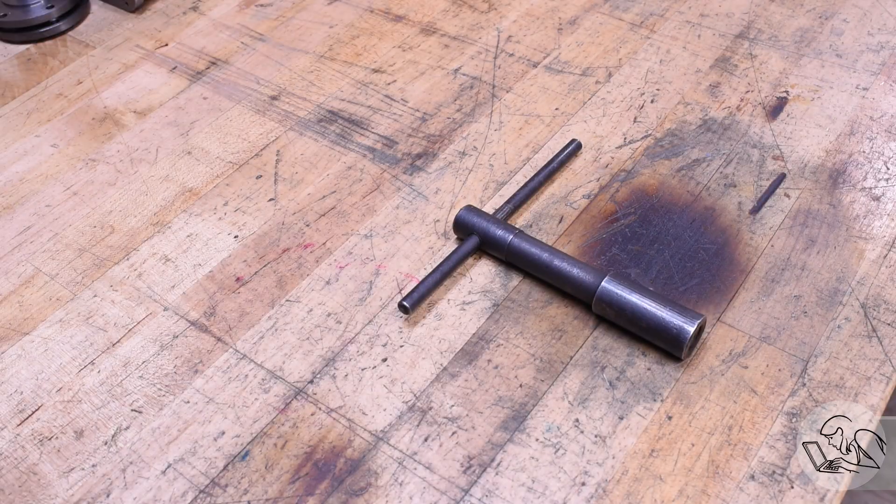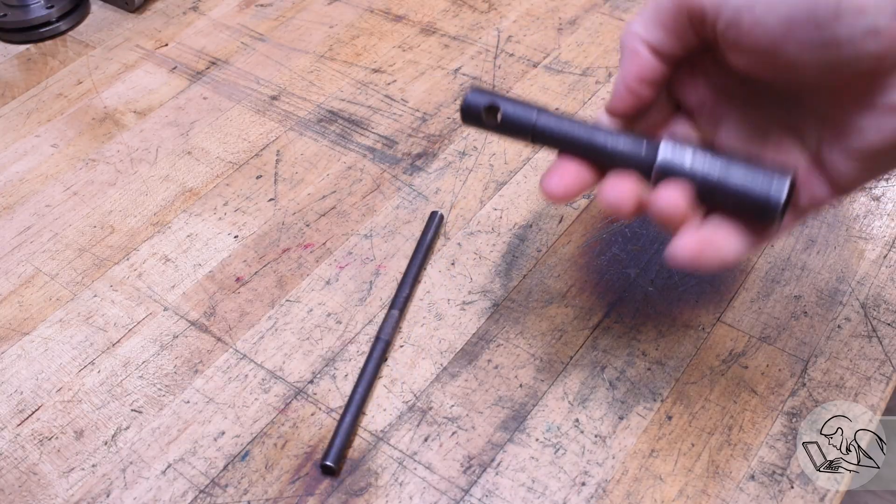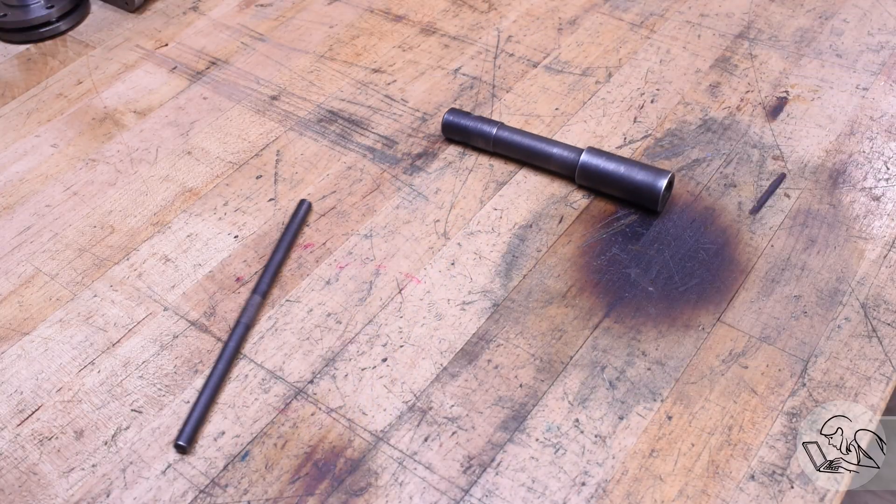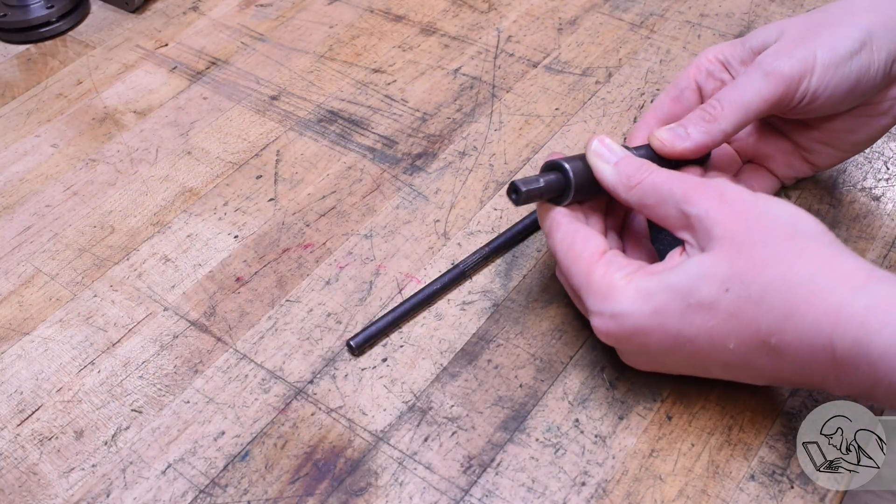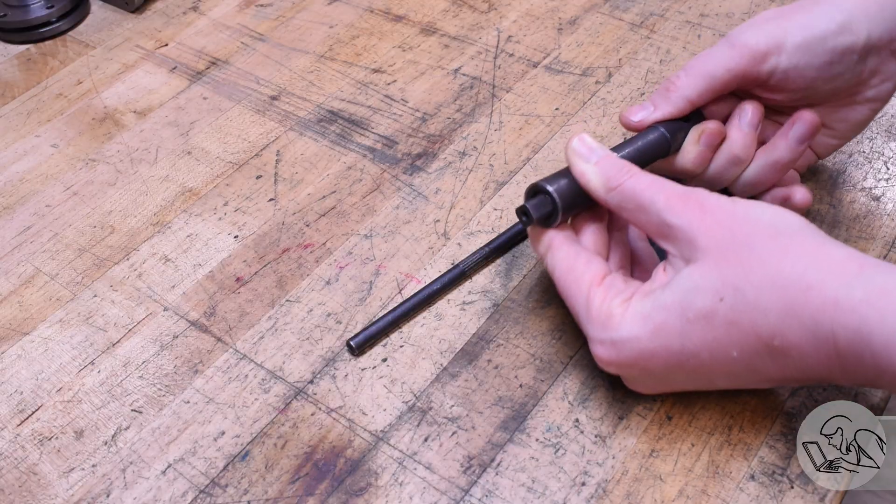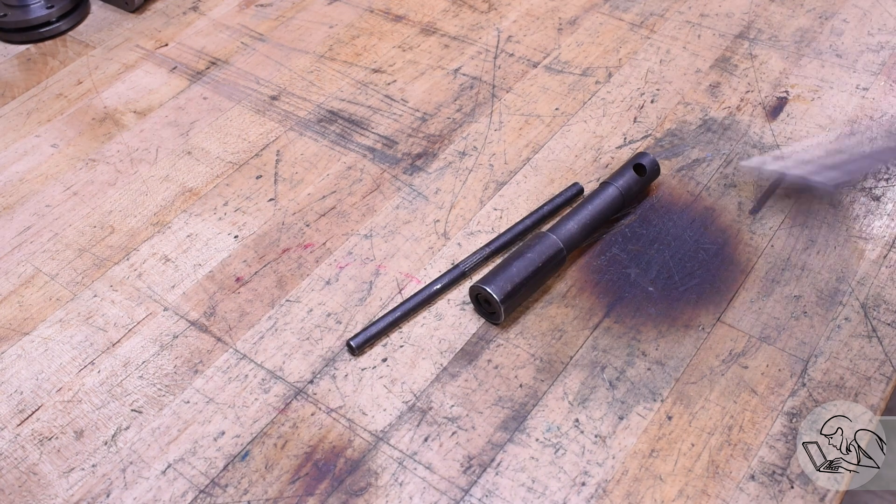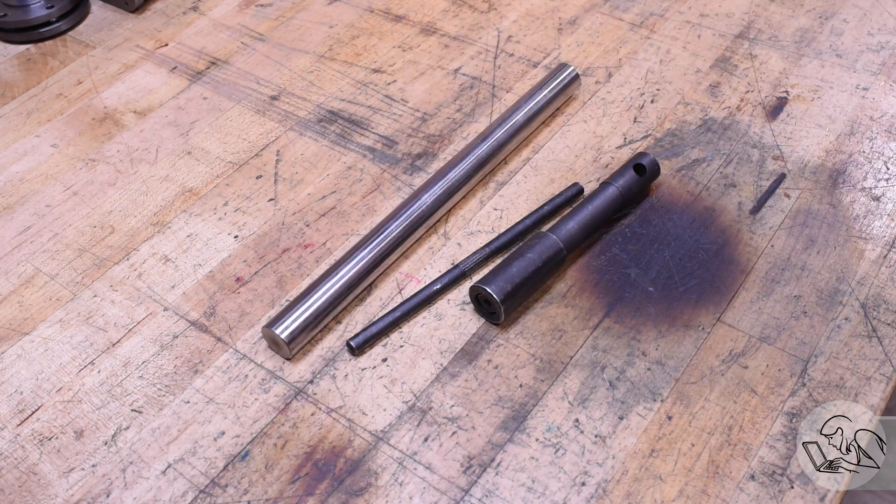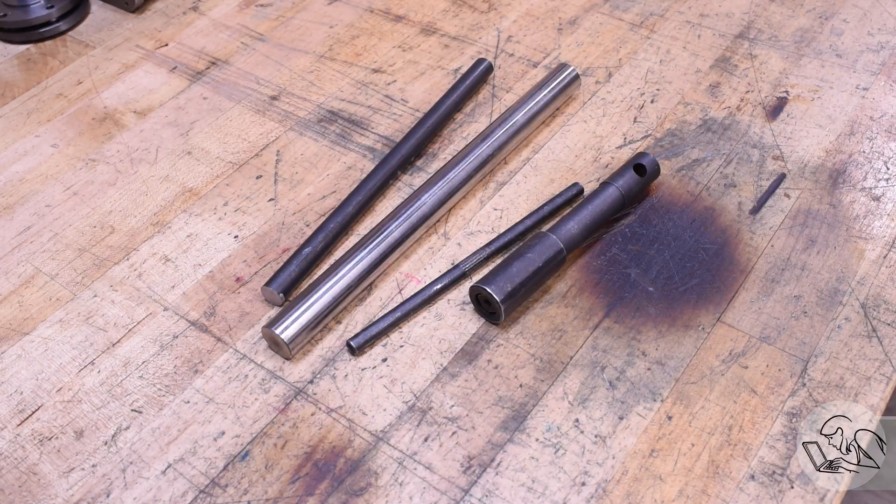Here's the chuck key that came with my lathe and it's well functional but after several years it's really giving up the ghost. The tommy bar doesn't stay in place anymore and it's got this spring-loaded safety feature that just gets stuck and renders the thing unusable. So I've got some material here to make a new one. I've got some nice 01 tool steel and a piece of 1144 stress proof for the handle.